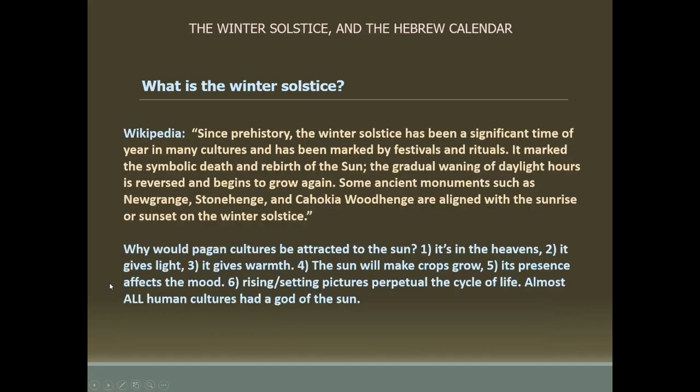Since prehistory, the winter solstice has been a significant time of year in many cultures, marked by festivals and rituals. It marked the symbolic death and rebirth of the sun. The gradual waning of daylight hours is reversed and begins to grow again. Some ancient monuments, such as Newgrange, Stonehenge, and Cahokia Woodhenge, are aligned with the sunrise or sunset on the winter solstice. The winter solstice was celebrated in Rome for a number of days leading into and past December 25th — that was the origin of Christmas celebrations.